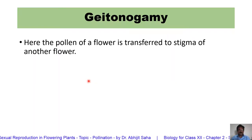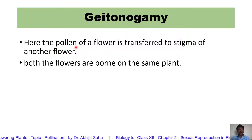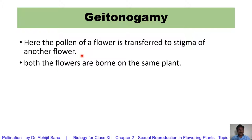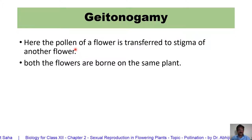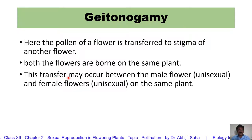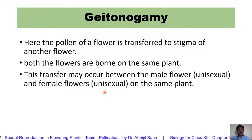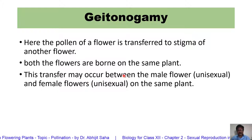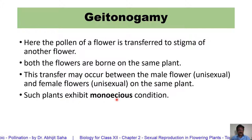Next is getonogamy. This is another type of self-pollination. The difference is that pollen of one flower is transferred to the stigma of another flower, but both flowers are different yet borne on the same plant. In autogamy it was within the same flower; here it is between two flowers on the same plant. This may occur between male and female flowers — unisexual flowers both borne on the same plant. This is also getonogamy because they are genetically the same. These plants are called monoecious plants.